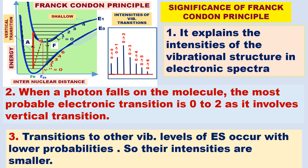Where positions are changed, the transition is less probable. The most probable electronic transition is 0→2 as it involves vertical transition. Other transitions — 0→1, 0→3, 0→4 — are non-vertical transitions. Transitions to other vibrational levels are also allowed but occur with lower probabilities, and their intensities are getting smaller and smaller. For this case, the intensity increases and then decreases.